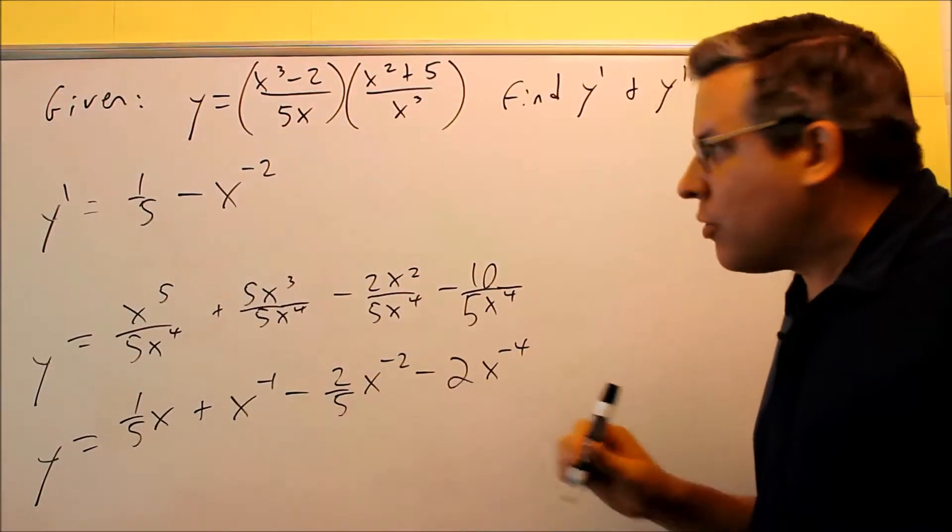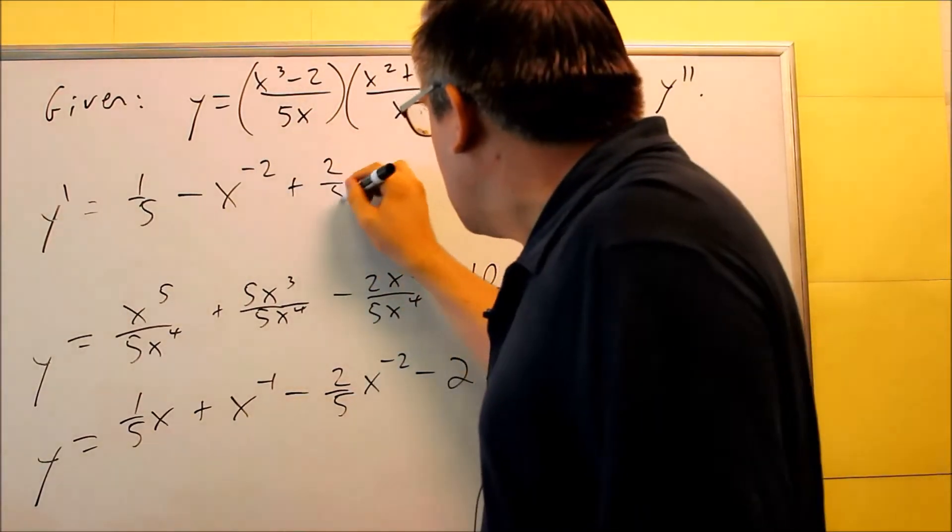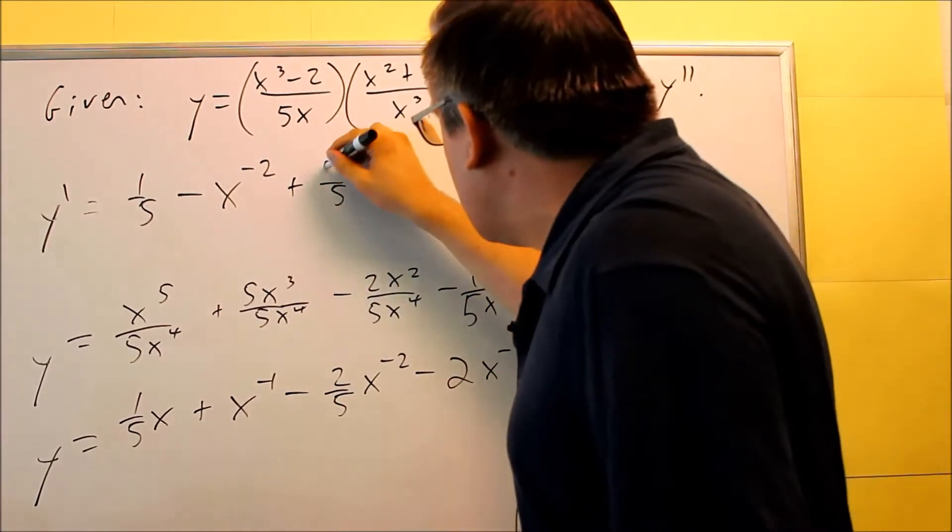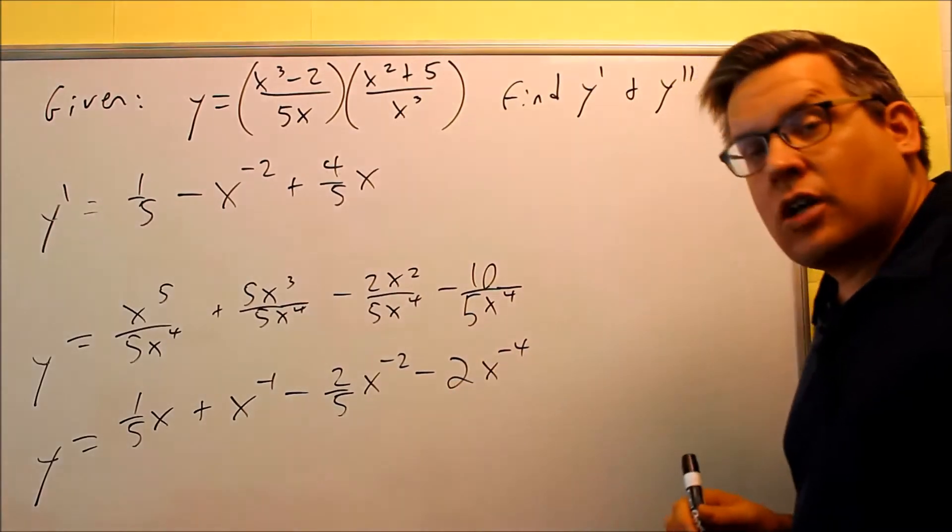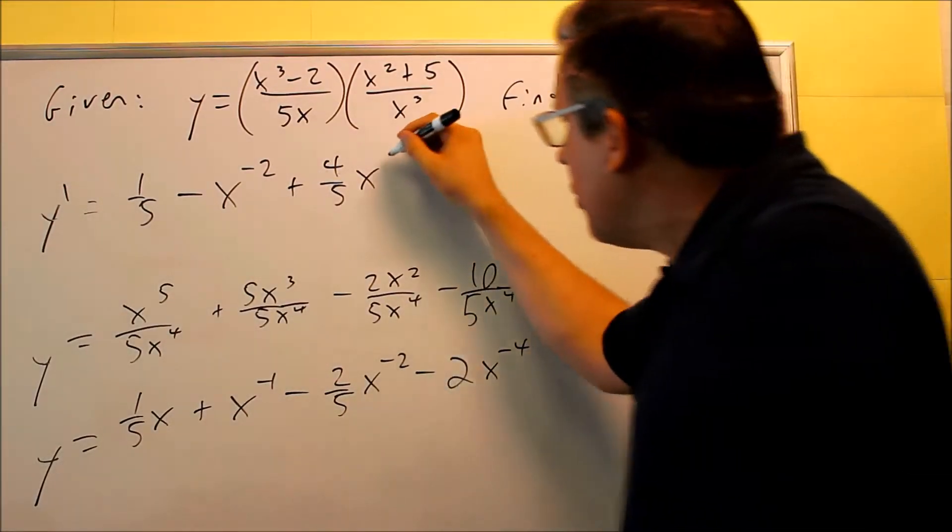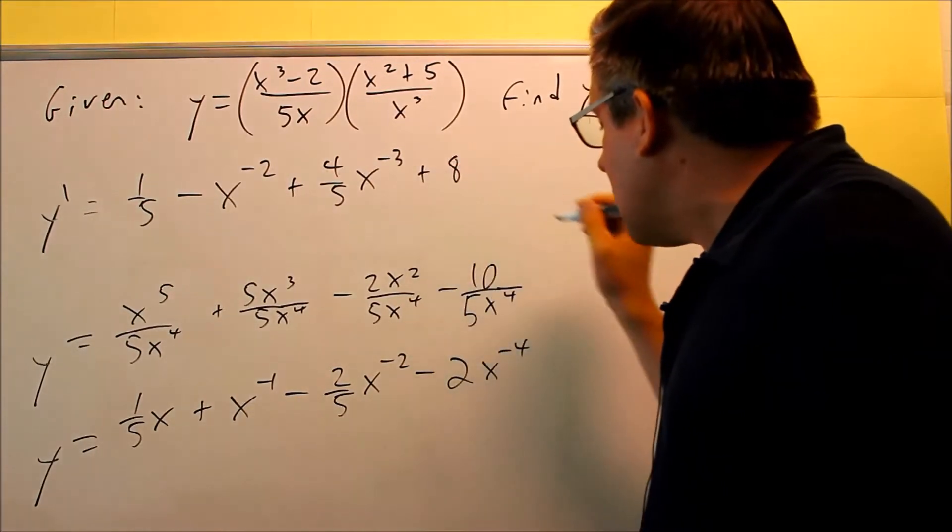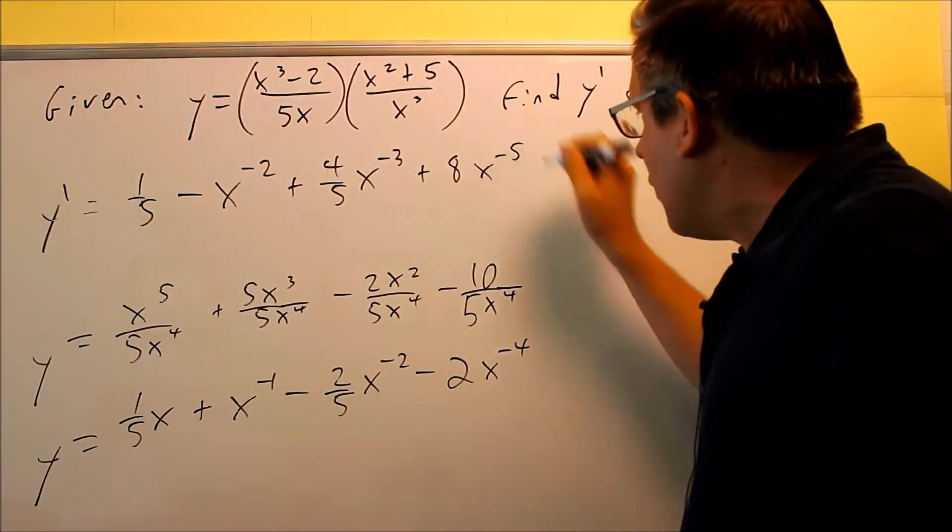This one, negative times negative multiply together to give you a plus four fifths, actually, because you're multiplying the negative 2 times negative two fifths. So subtract 1 from here and you get negative 3. This one, you're multiplying these, you get a plus 8x to the negative 5th. So that right there would be your first derivative.